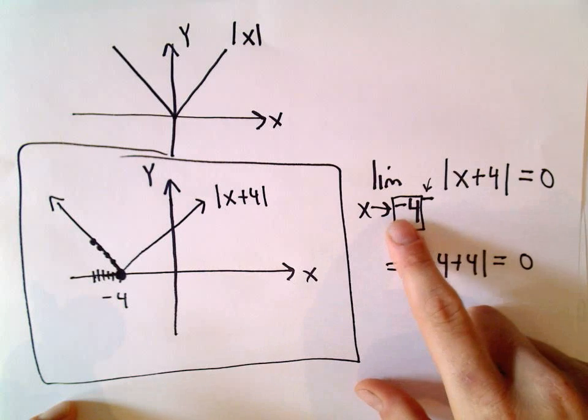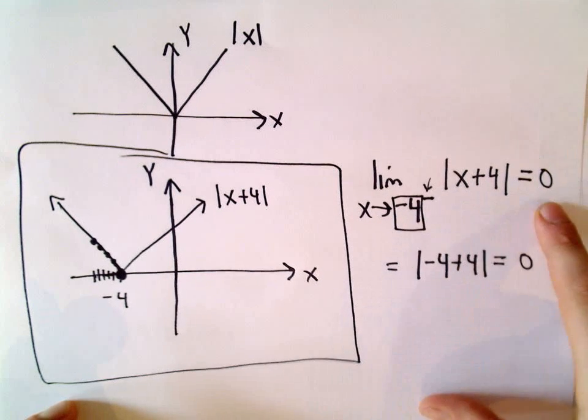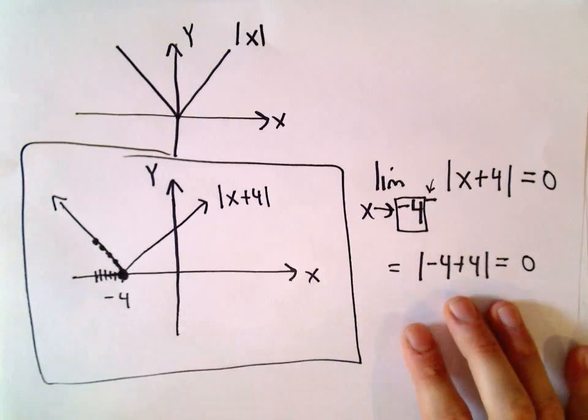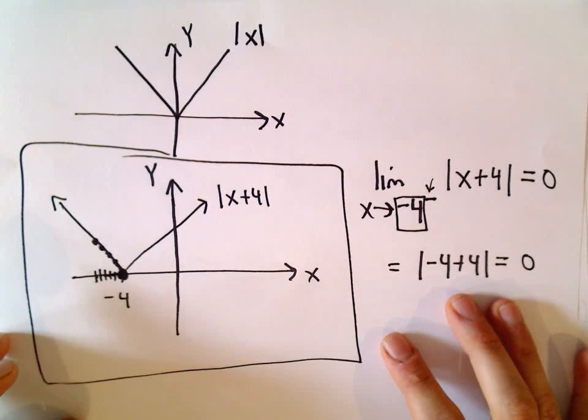So I could just plug in negative 4 and get 0 out, and boom, I'm done. But again, just to give you some intuition as to what's going on with the graph.